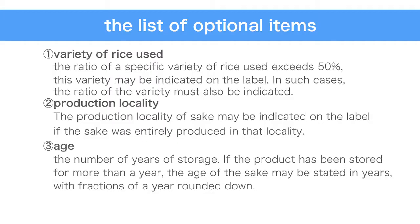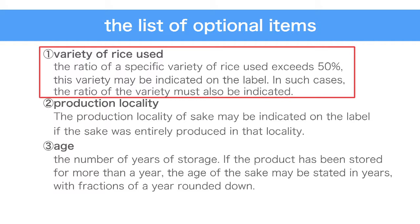Now let's look at optional information that brewers can indicate on the label if the product meets their particular requirements. The first optional item is variety of rice used. When the ratio of a specific variety of rice used exceeds 50%, this variety may be indicated on the label, and in such cases the ratio of the variety must also be indicated.